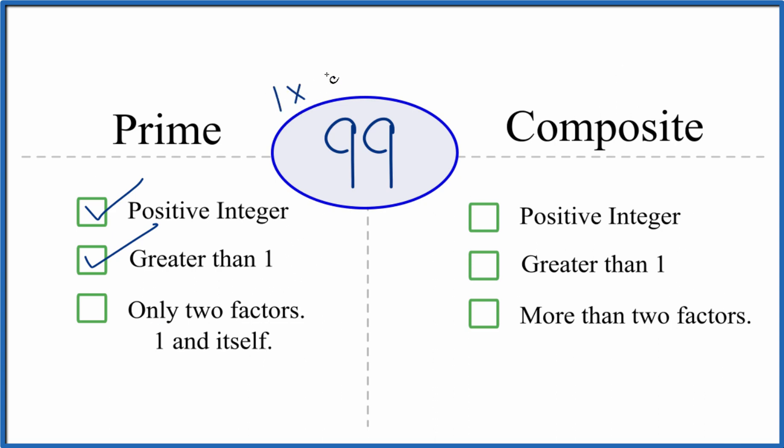So 1 and 99, they would be the only factors. So 1 times 99, that equals 99. So there's two factors. Is there anything else that goes into 99? Turns out that 9 times 11, that equals 99. We also have 3 times 33.